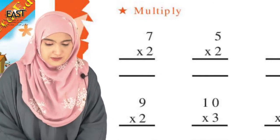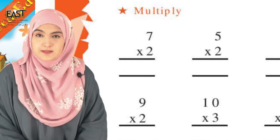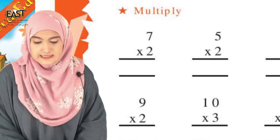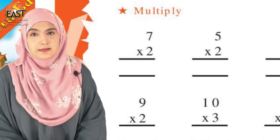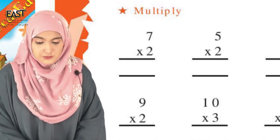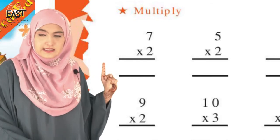All right, so to solve these questions, it's very important that your tables are revised. So what will be the answer to part A? Two times seven gives us fourteen, very good.